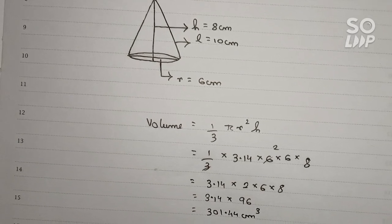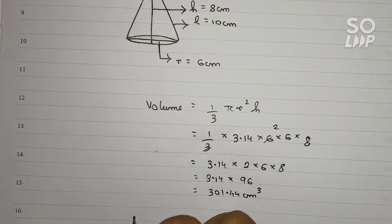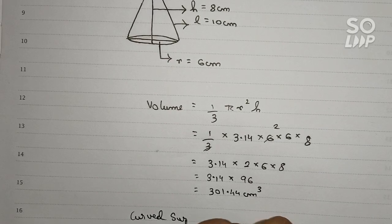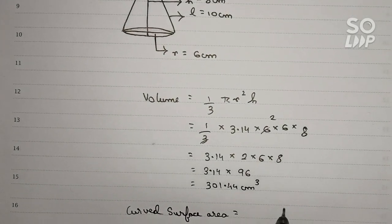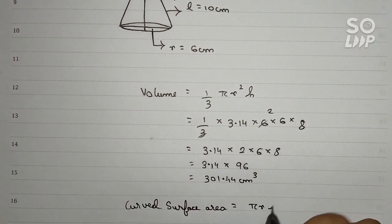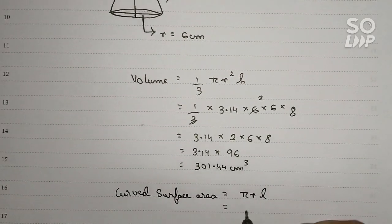So we get the volume. Now find out the curved surface area. Curved surface area formula is π r l, so π value is 3.14...